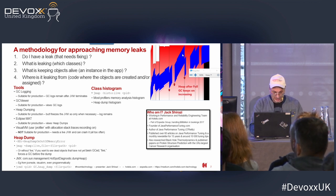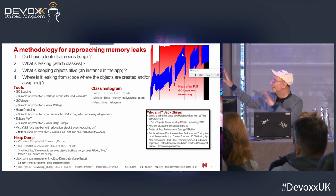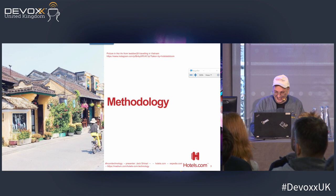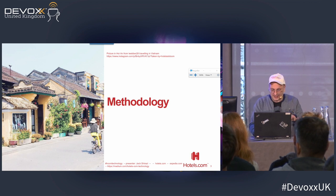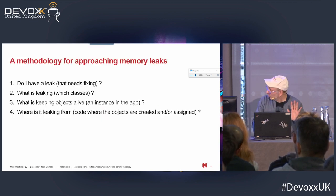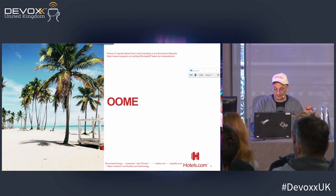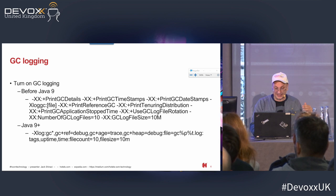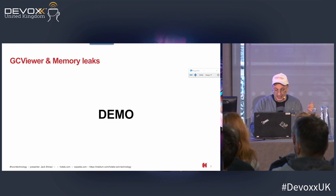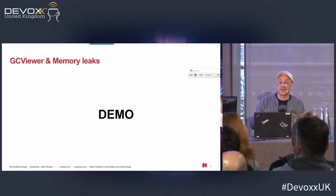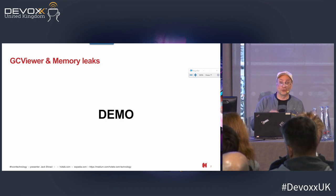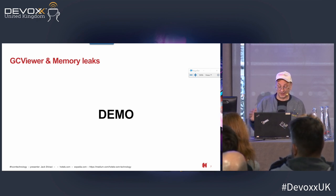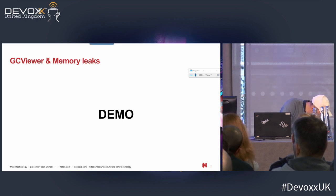Over in the right-hand corner is who I am — if you're familiar with it you're welcome to leave. These pictures are from the hotels.com Instagram account, all competition winners — this is Vietnam if you want to go there, beautiful. So the four questions we're going to answer: do I have a leak, what is leaking, what's keeping them alive, where is it leaking from? And on GC logging: before and after Java 9 you should have GC logging turned on for your application — there is almost no overhead, and everybody recommends that you have it on.